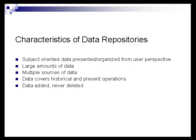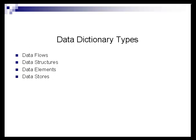Characteristics of Data Repositories are subject-oriented data, organized from user perspective, large amounts of data, multiple sources of data, data covers historical and present operations, data added and never deleted. Data Dictionary types: data flows, data structures, data elements, and data stores.